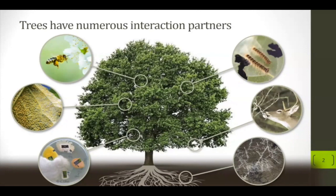Trees have numerous interaction partners under natural conditions. We find pollinators or mycorrhizal fungi, which have quite positive effects on trees, but we also find negative interaction partners such as herbivores like deer, insect herbivores, or pathogens and viruses that harm the plant. Nevertheless, this is the natural situation. In the lab and in many studies, people focus on single interactions. I was interested in what happens when both fungi and insects are at the same time at the tree and how these organisms interact with each other.